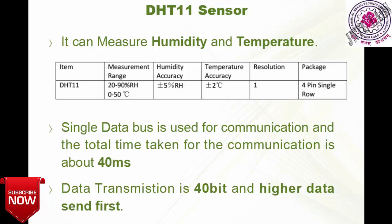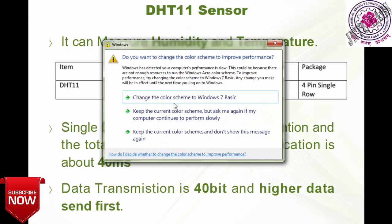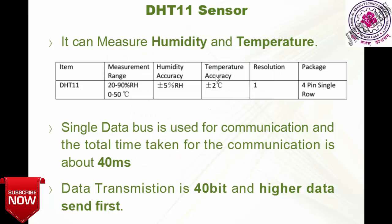The DHT11 measures humidity and temperature. The measurement range is from 20 to 90% humidity, with an accuracy of 5 to 10%. The temperature range goes up to 50 degrees Celsius. Temperature accuracy is plus or minus 2 degrees centigrade — so if it is 30 degrees centigrade, it may read 32 or 28.